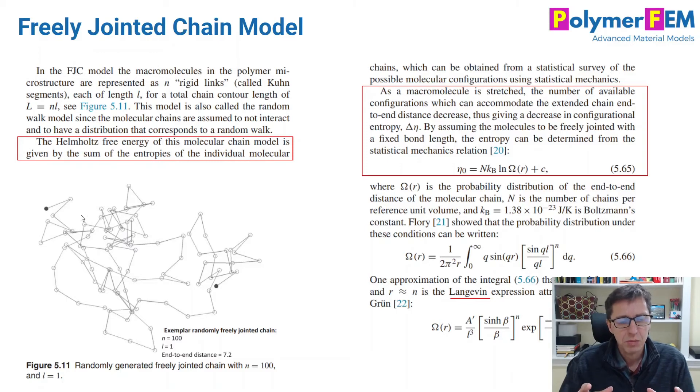And the key here is to talk about something called the Helmholtz free energy. So the Helmholtz free energy is the sum of the entropies of the individual molecular chains. And by doing these simple chain models, we can calculate in closed form the entropy of this system. So that's done using this statistical mechanics equation. So the entropy is given by the configuration of the molecular molecules that you're looking for.